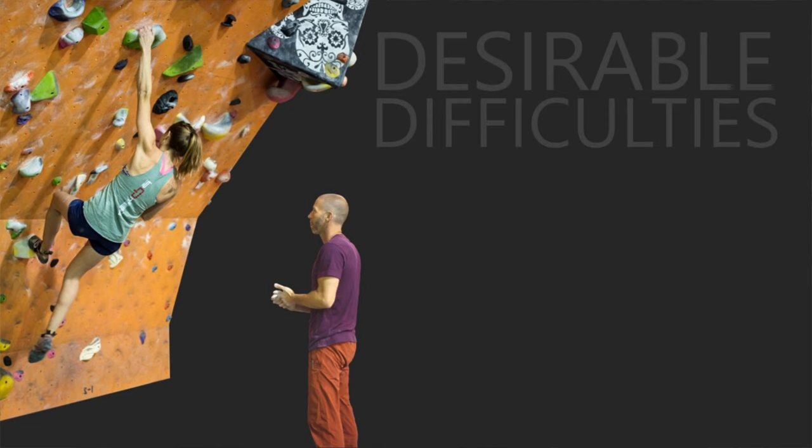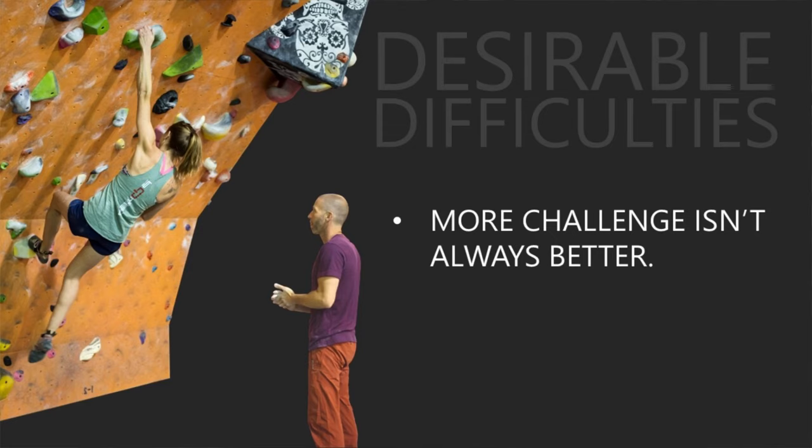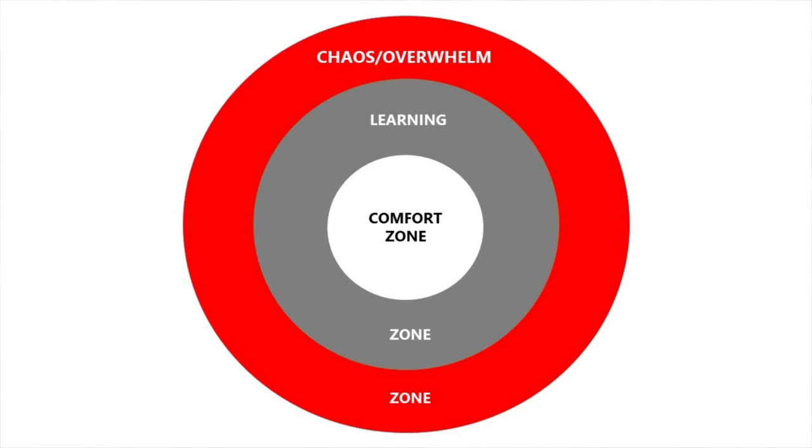Next is desirable difficulties — a term coined in 1994 by UCLA psychologist Robert Bjork. It refers to the idea that we want to add difficulty to a task in a way that improves learning rather than hindering it. Challenge is good, but there's a point at which things become too challenging — too much unknown, too much chaos. Think back to that comfort zone chart: too much difficulty can push into the chaos zone, so more challenge isn't always better.